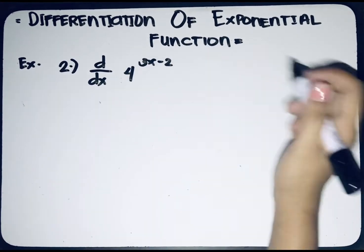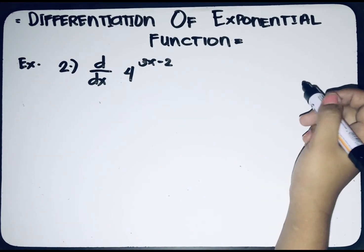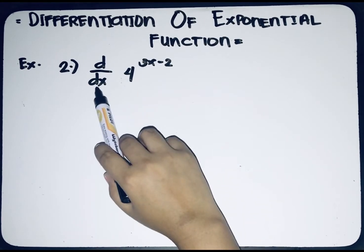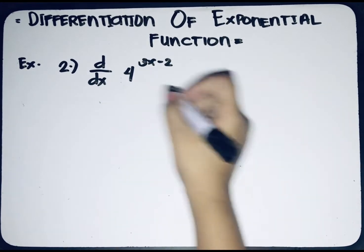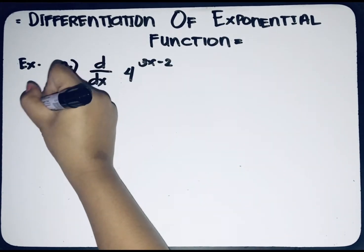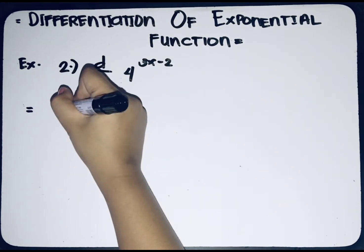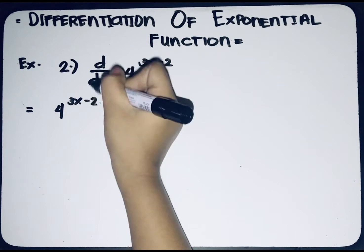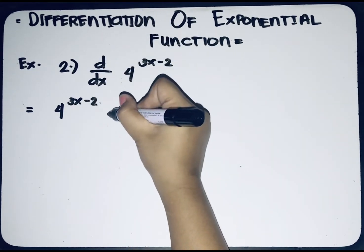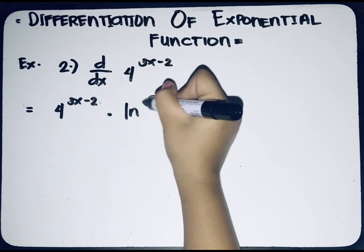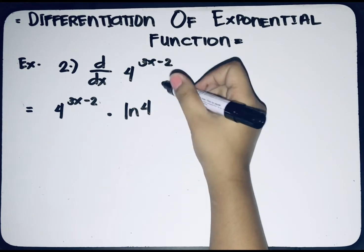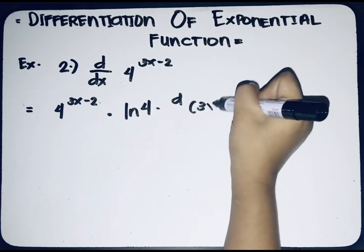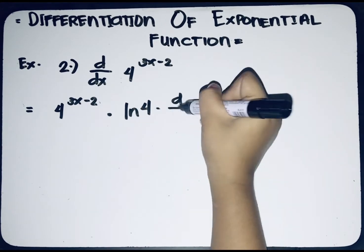For the second example, find the derivative of 4 raised to (3x − 2) with respect to x. Applying the first formula, we get 4 raised to (3x − 2) multiplied by ln(4), then multiplied by the derivative of (3x − 2) with respect to x.